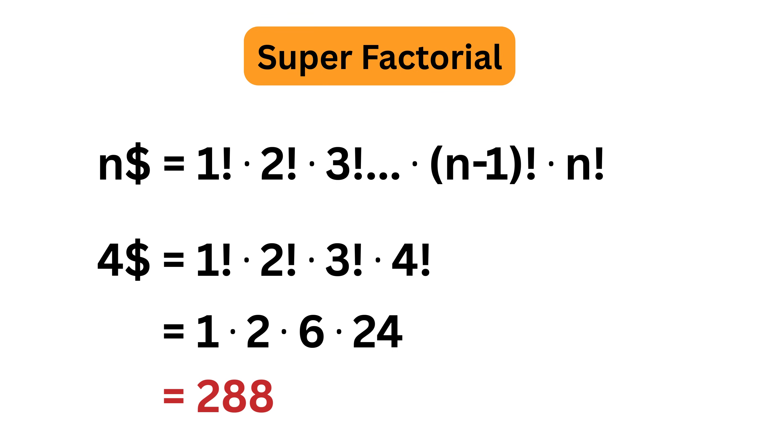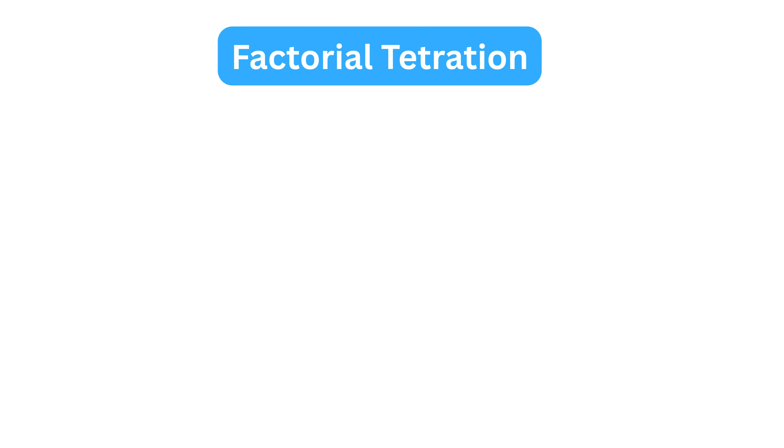It grows really fast compared to the regular factorial. Then we have factorial tetration. Factorial tetration is when we take a number n, first calculate its factorial, and then perform tetration using that result like n factorial tetration n factorial.